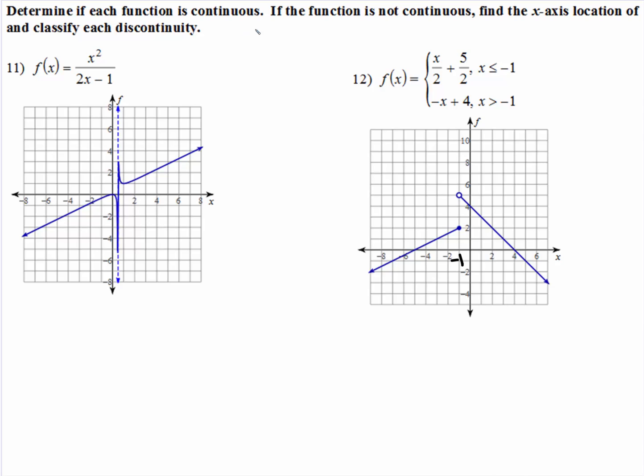Determine if each function is continuous. If the function is not continuous, find the x-axis location. So we've been talking about how to classify, but I'm not sure everybody is clear on everything that needs to be written. As soon as you see an asymptote, we know that function is not continuous. But you have to tell me where. Where x equals, it looks like one half, because here's one.